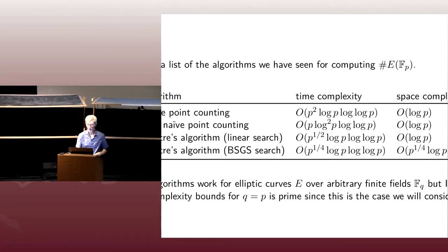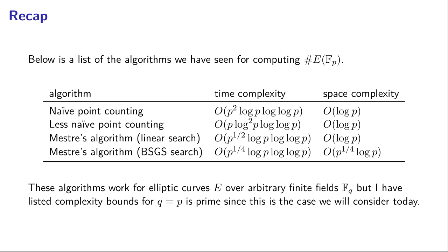Just to recap where we left off last time, we were looking at algorithms for counting points on an elliptic curve over a finite field, and we looked at four different algorithms. There was a naive point counting algorithm where we were literally just counting projected points, which had time complexity roughly p squared. Then we had a slightly less naive version where we took advantage of the fact that we can quickly count rational roots of a polynomial over a finite field, and that brought us down to a running time that was quasi-linear in p. And then we looked at Mestre's algorithm.